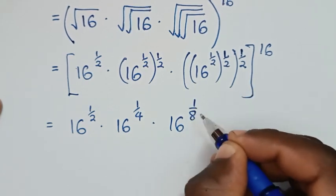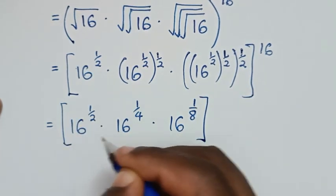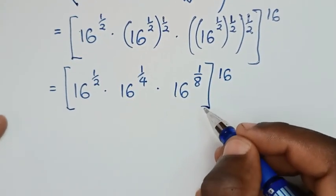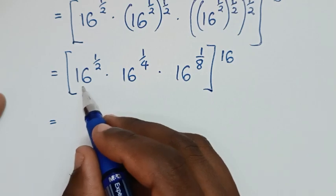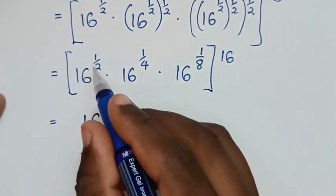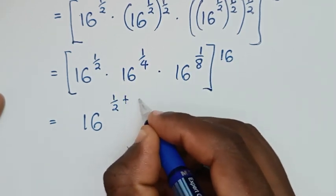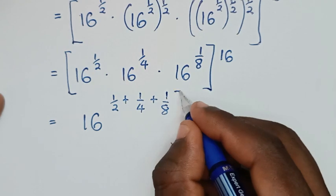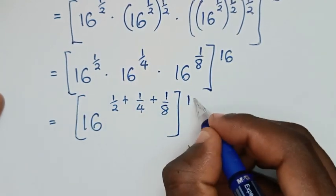Then in the next step, it will be equal to — here we have the same base of 16. So it will be 16, then we'll add the powers: this plus this plus this. So, 1 over 2, plus 1 over 4, plus 1 over 8, then bracket, this power of 16.